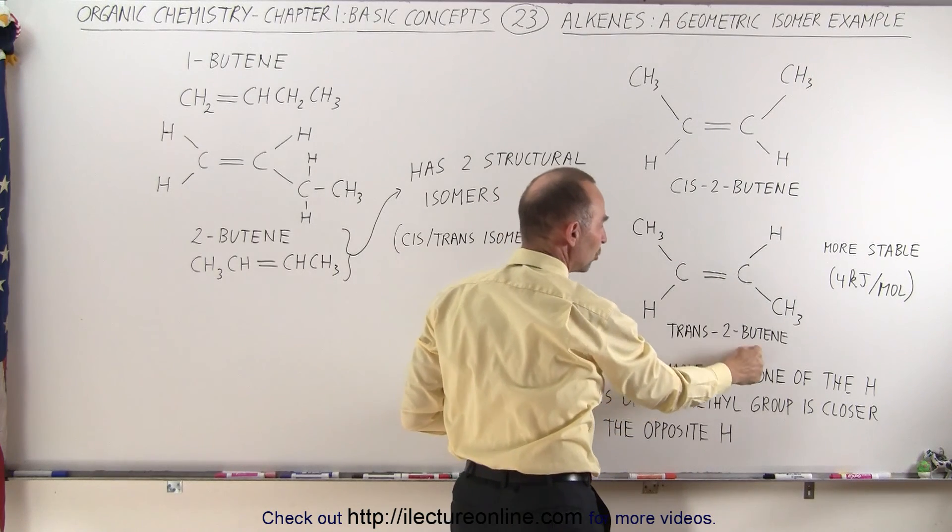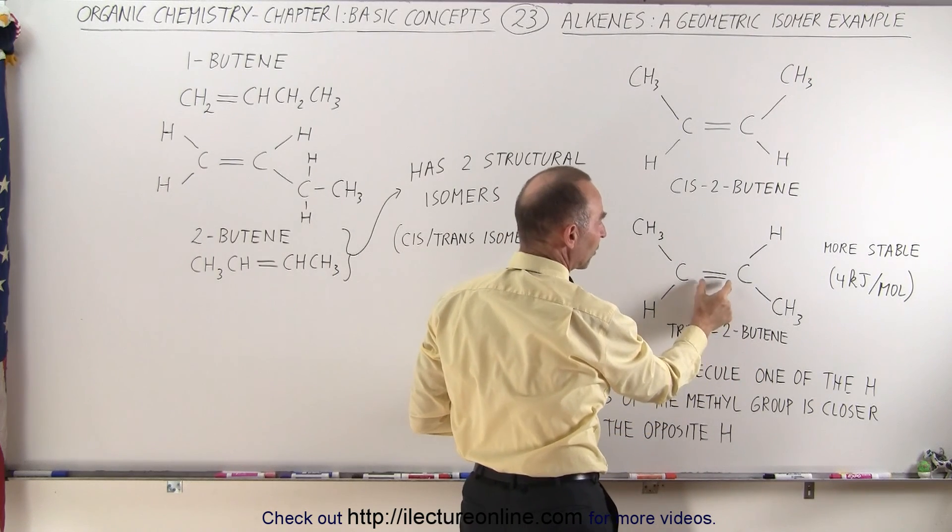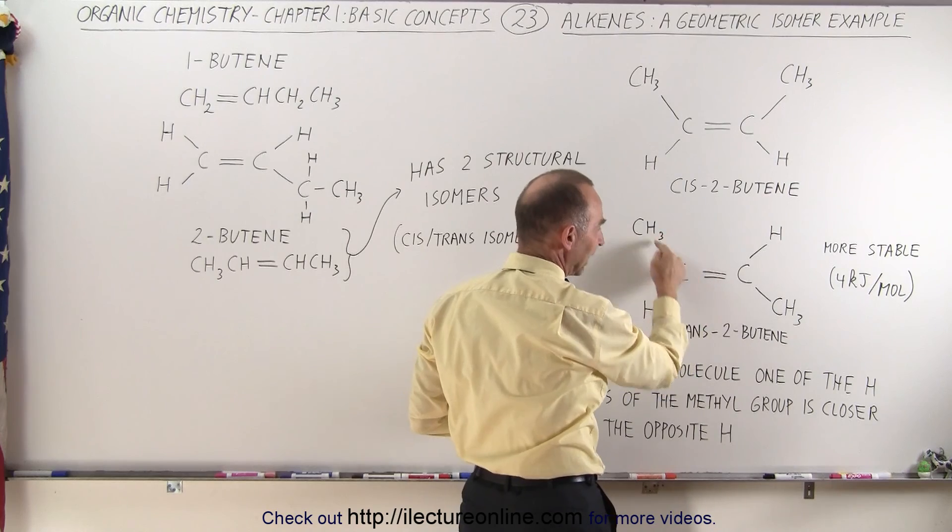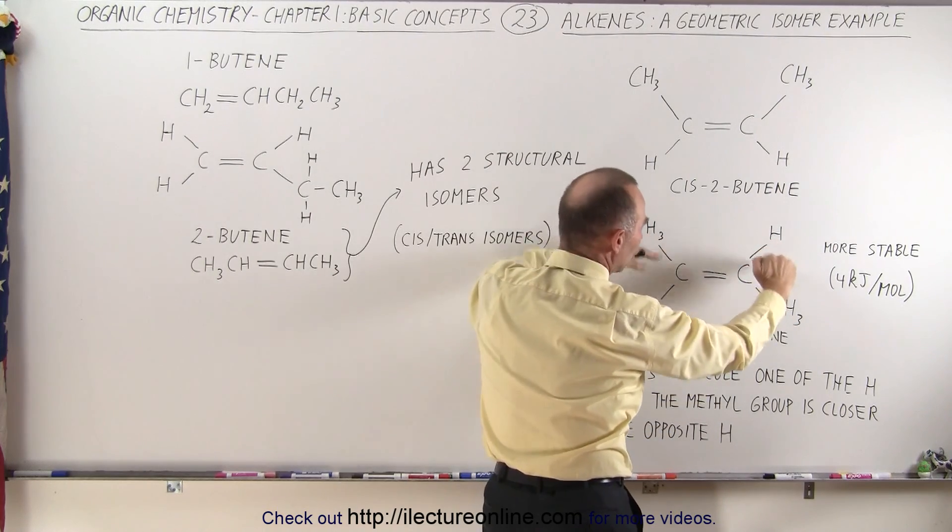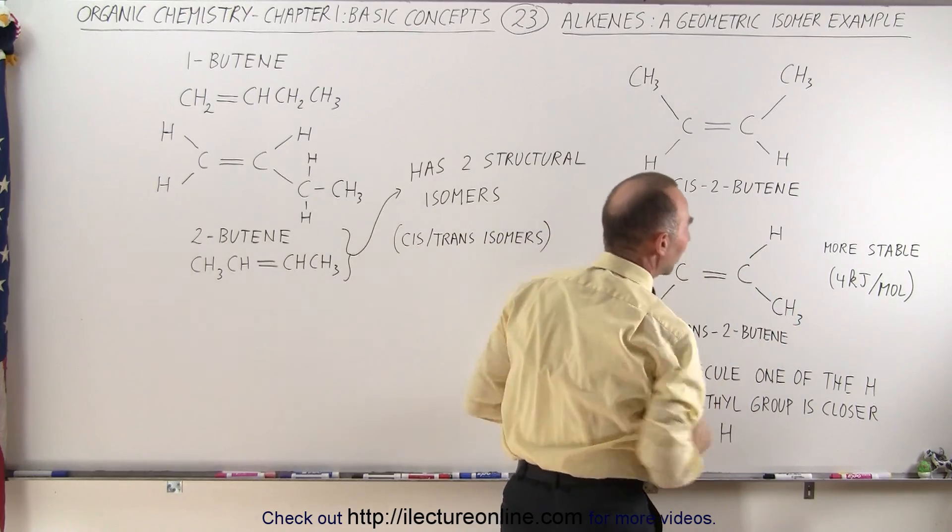Here, trans-2-butene. Again, two means that we have the double bond as the second bond in the chain, and the chain goes like this. And trans means that the two methyl groups are on opposite sides of the molecule.